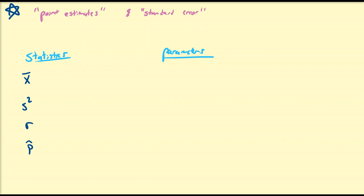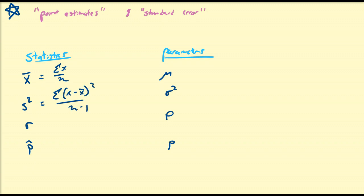These are estimates for the parameters mu, sigma squared, rho, and p. Each of them has their own calculation formula. For example, the sample mean is the sum of all x values divided by the sample size n. The sample variance is the sum of all (x minus x-bar) squared divided by n minus 1.